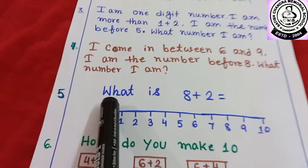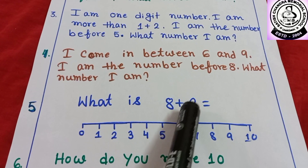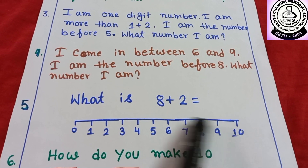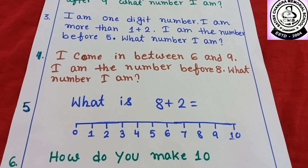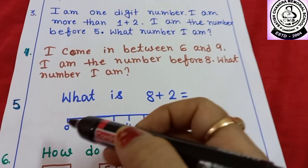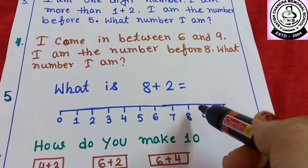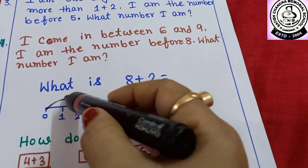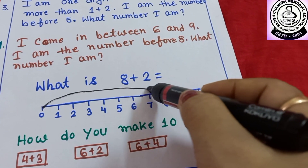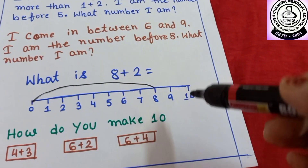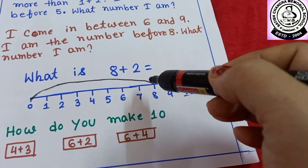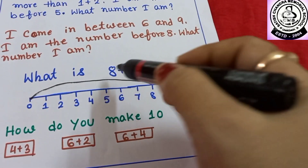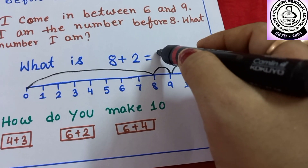Number 5. What is 8 plus 2? Here I have drawn a number line. From 0 to 8, first you have to jump, then jump 2 more times: 1 and 2. So, 8 plus 2 is equal to 10.